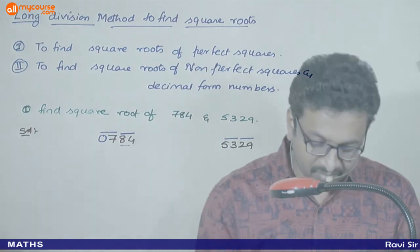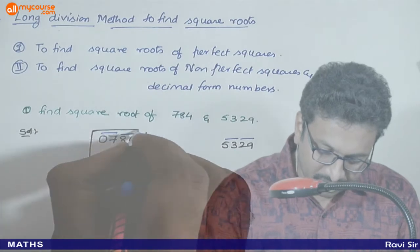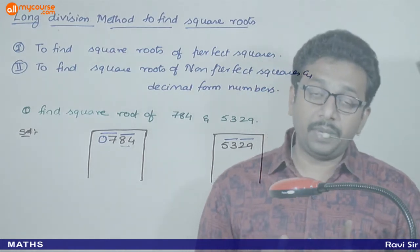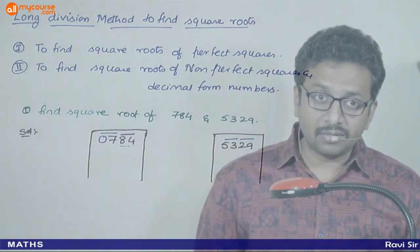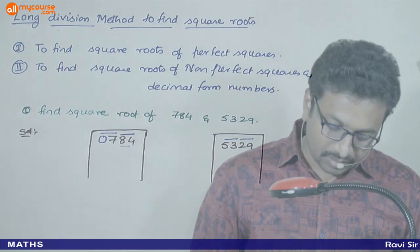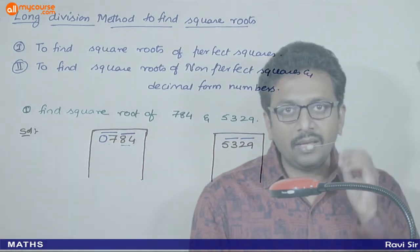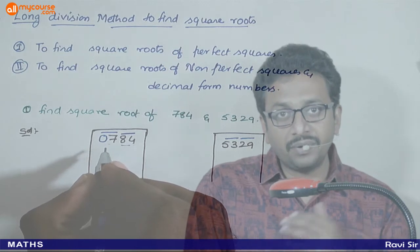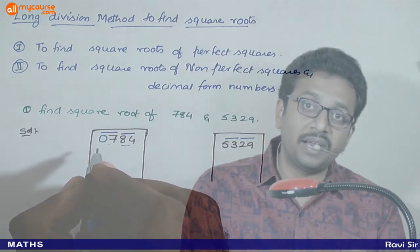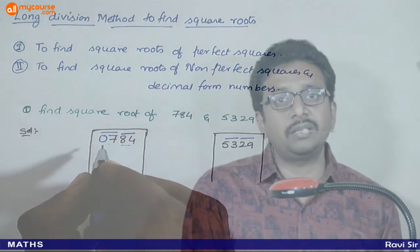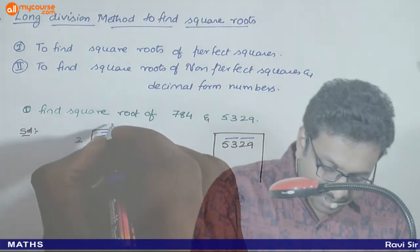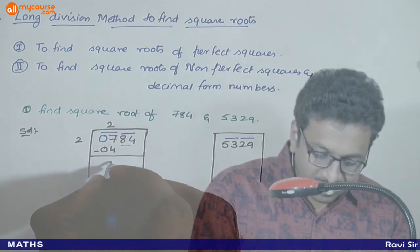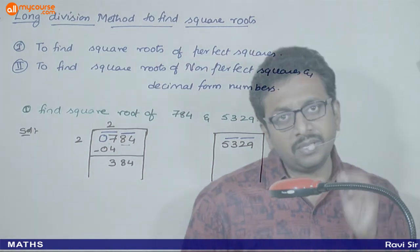Now draw two columns. We are starting with perfect squares, so we know the square roots will be whole numbers. First step: take the first pair from the left. For 784, the first group is 7. Check squares: 1² = 1, 2² = 4 — less than 7. 3² = 9 — greater than 7. So take 2, since 2² = 4 is just less than 7. Write 2 above and 04 below. Subtract: 07 − 04 = 3, then carry over the next pair 84, giving 384.